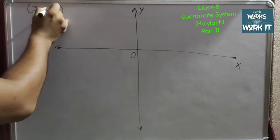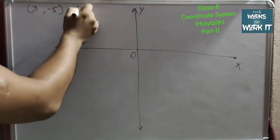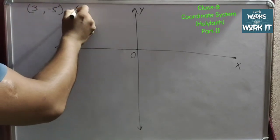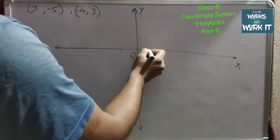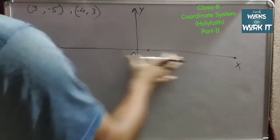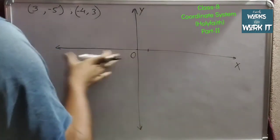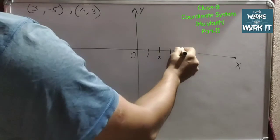Suppose it is (3, -5) and (-4, 3). So I will start to write the points. This is x-axis, so here it will be positive, here it will be negative. So 1, 2, 3,